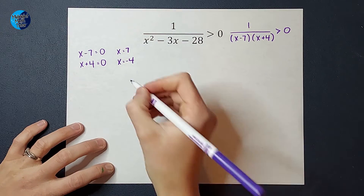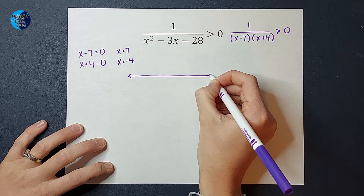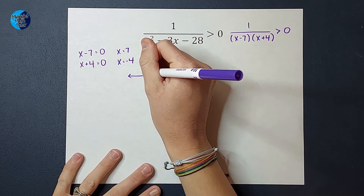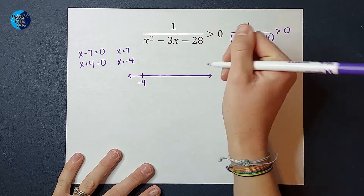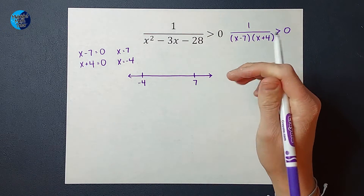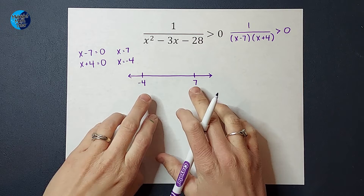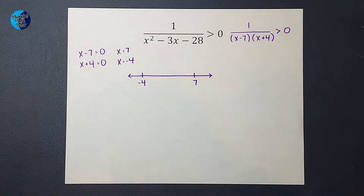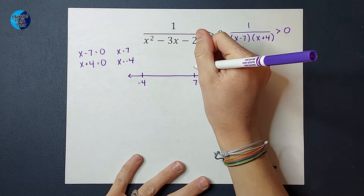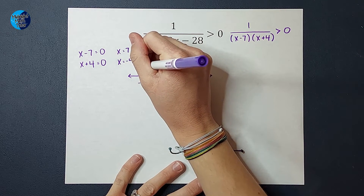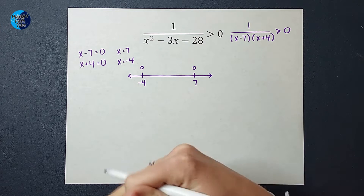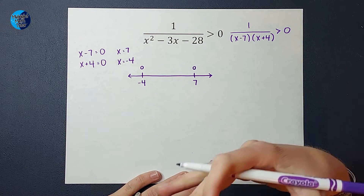Now we're going to draw everyone's favorite thing in math — a number line. There it is. Isn't it pretty? I want to represent each of these numbers on my number line, so I'm going to have negative four here and seven approximately there. Now I need to know if I'm going to put an open or a closed circle on both of these spots. I know both of these are going to be open circles because if I were to plug these in for X, I would get a zero in the denominator, which is never okay in math.